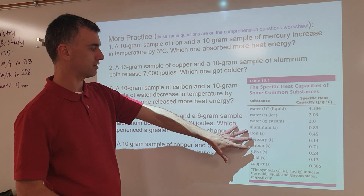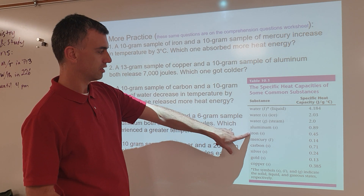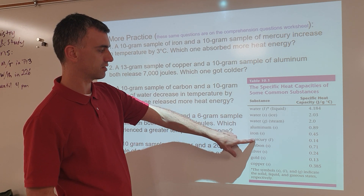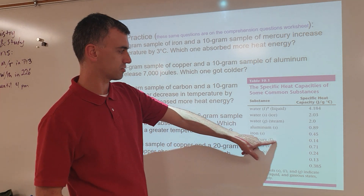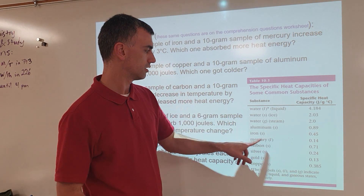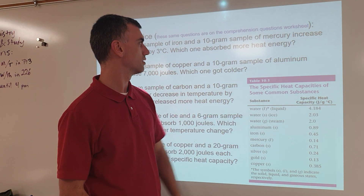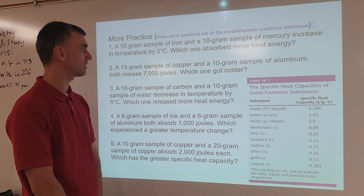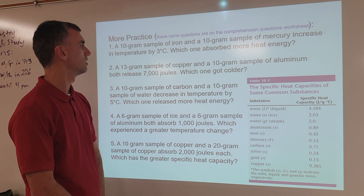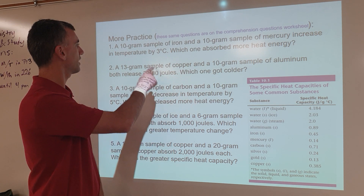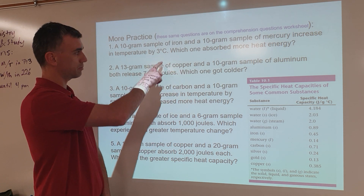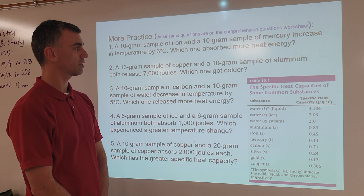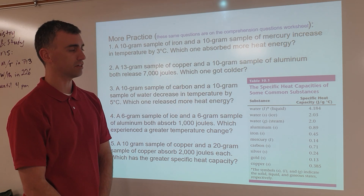This information is given to help answer that question. We notice that different substances have different specific heat capacities. Mercury has a lower specific heat capacity than iron. So iron has a greater specific heat capacity and mercury has a lower one. They have the same temperature change — which one absorbed more heat energy?